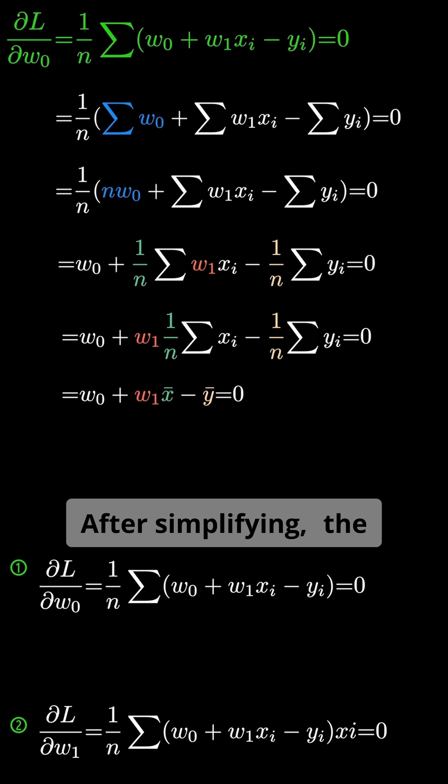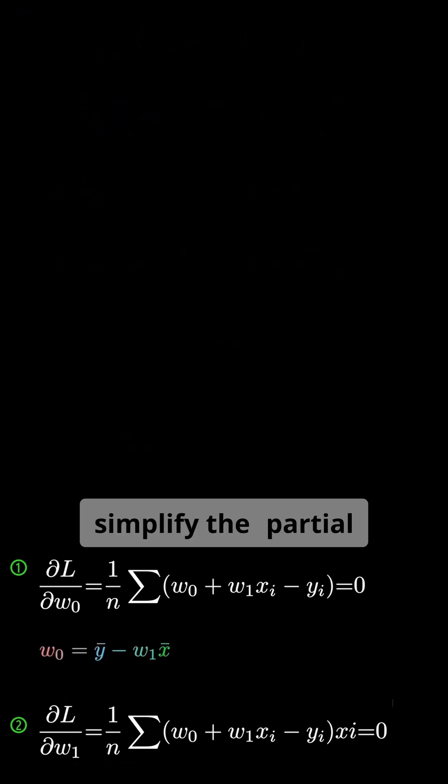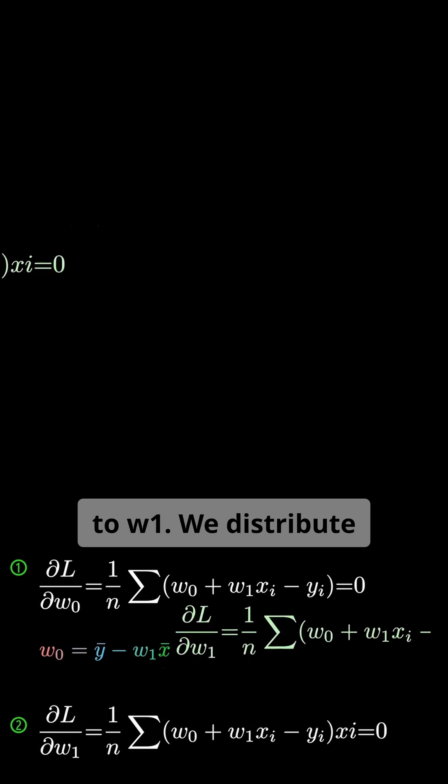After simplifying, the expression for w0 looks like this. Next, let's simplify the partial derivative with respect to w1.